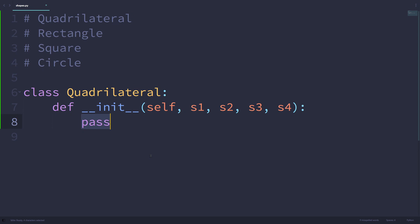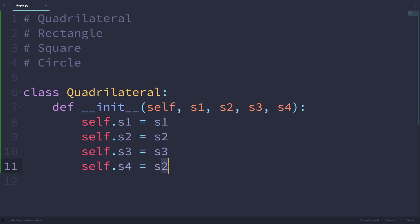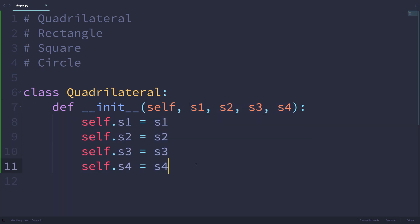In the body of the init method, we're going to assign those values to instance attributes: self.s1 = s1, self.s2 = s2, self.s3 = s3, and self.s4 = s4. On the left side of the equal signs, those are what are known as instance attributes — the values associated to a certain quadrilateral instance. On the right side are what's passed in when we create the object, and we are assigning those values to the instance attributes so they can be used in other places in the class.